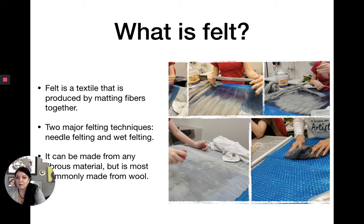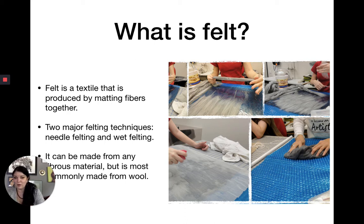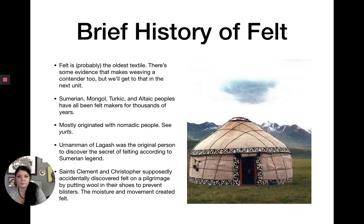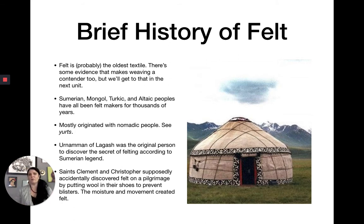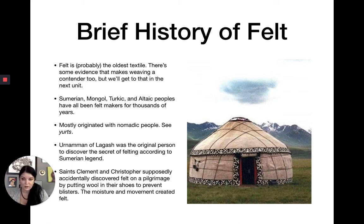The other kind of felting is needle felting, which we are going to do. It can be made from basically any fibrous material, but it's most commonly made from wool. It's very, very old. Let's do a really quick brief history of felt overview — and as you know from my History of Dye lecture, I can talk about the history of things related to art for a long time, but we're going to do this quite briefly.